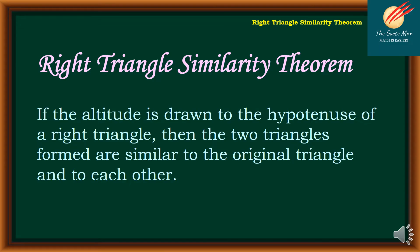The Right Triangle Similarity Theorem states that if the altitude is drawn to the hypotenuse of a right triangle, then the two triangles formed are similar to the original triangle and to each other.